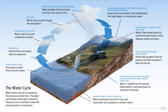Evapotranspiration is water transpired from plants and evaporated from the soil. The water molecule H2O has smaller molecular mass than the major components of the atmosphere, nitrogen and oxygen, N2 and O2, hence is less dense. Due to the significant difference in density, buoyancy drives humid air higher.